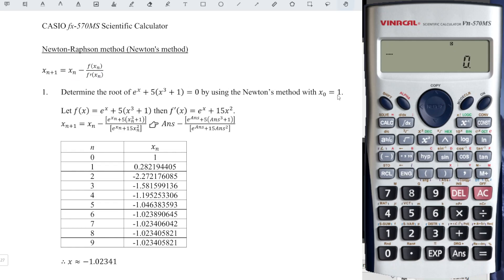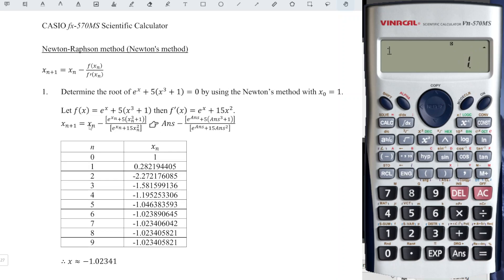What we have to do here is initiate the value with the value given, which is 1, and we press equal. By default, this value will be stored automatically in the answer button. So what we have to do next is replace all the x values using the answer button. So let's try.